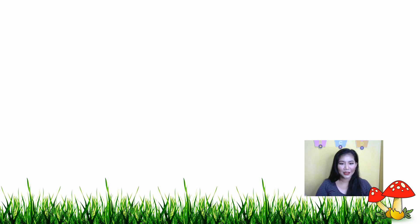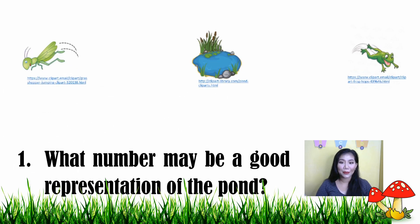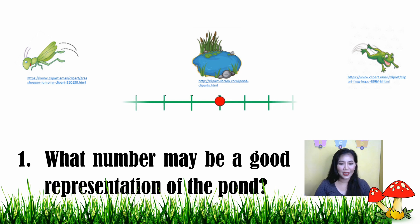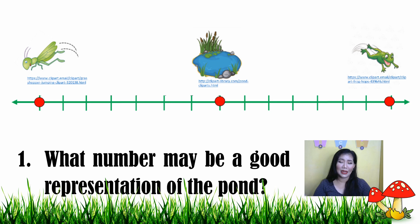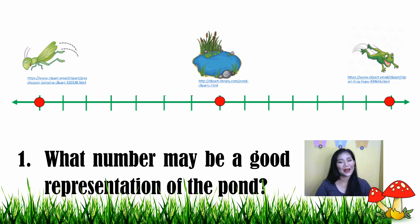Here is the question: what number may be a good representation of the pond? In order for us to answer this, we have a number line. You can see the number line there with scales. In a number line we have different numbers, and the number that may be a good representation of the pond is zero.